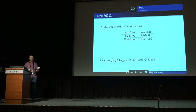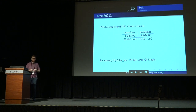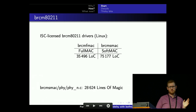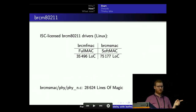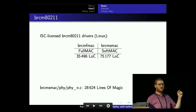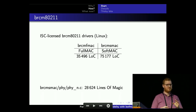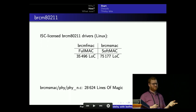I looked around and found a Linux driver, and thankfully it was ISC licensed, which meant I could grab and read code however I wanted. There are actually two drivers committed by Broadcom — one for the Full Mac and one for the SoftMac. The Full Mac chips are the newer generation and more powerful. The SoftMac driver has the Mac layer in code, and you can see that in the lines of code — one file alone has 28,000 lines of magic, and the first 10k are essentially magic numbers.